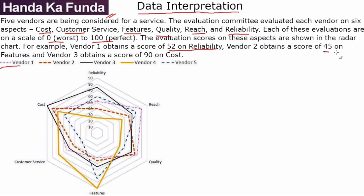Vendor 2 obtains a score of 45 on features. Vendor 2 is this orange dashed line. Counting up: 10, 20, 30, 40 — and above 40 is this point. It's below 50, around 45-46, exactly in the middle, so this one fits. Vendor 3 obtains a score of 90 on cost. This is how you are supposed to read the radar chart.